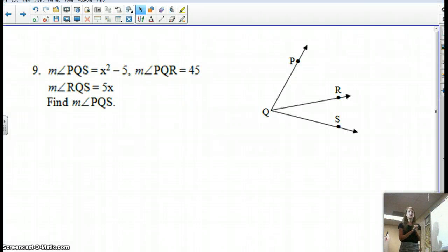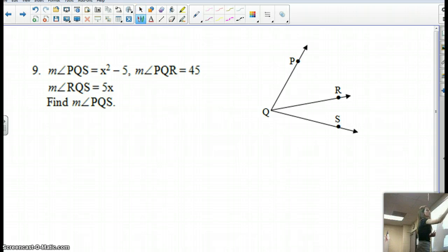Alright, we are on our angle addition worksheet and we are working out number 9. We have got angle PQS, and you've got a couple options. You can go over and label your angle like this: PQS is x squared minus 5.